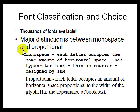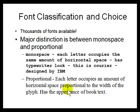Thousands of fonts are available online and on your computer. The first major difference between fonts is monospace, where each character has the same size — this is the Courier font designed by IBM. A proportional font, normally used in textbooks and newspapers, has each character occupying the amount of space required by its glyph, and characters are tightly fitted to each other. In monospace, the computer moves one character at a time; in proportional, the movement depends on the size of the character.